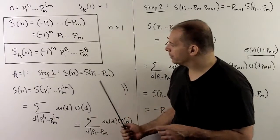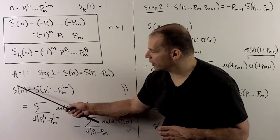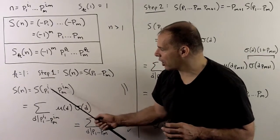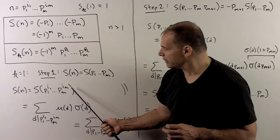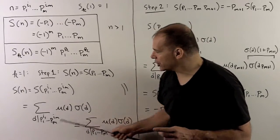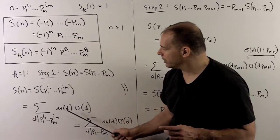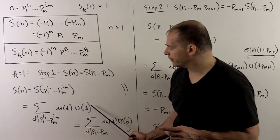Now to see this, we just take the definition. So S of n, we're going to have S on the prime factorization. We're going to take the sum over the divisors of the prime factorization, mu of d, sigma of d.